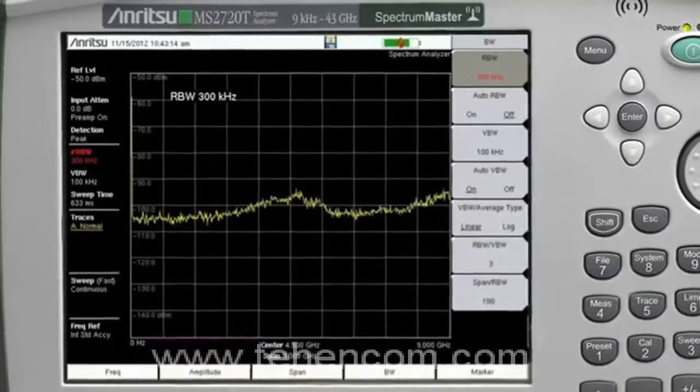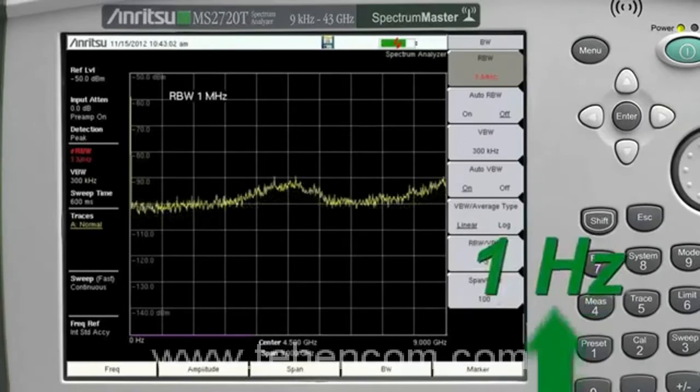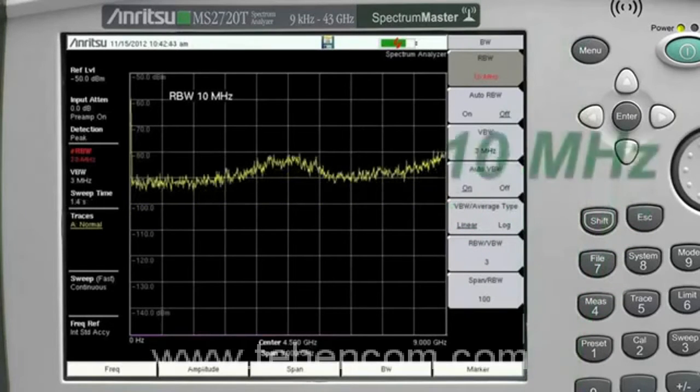Resolution bandwidth and video bandwidth choices go from 1 Hz to 10 MHz, giving you the freedom to choose the sensitivity of the instrument. With the new digital IF, you can have good sensitivity without sacrificing sweep speed.